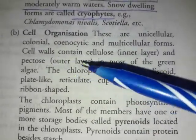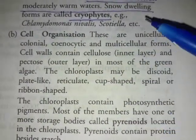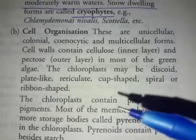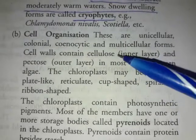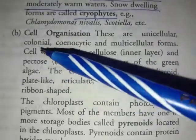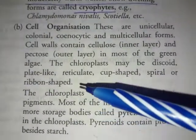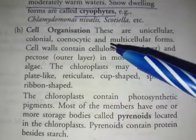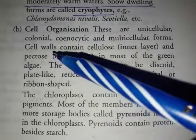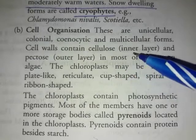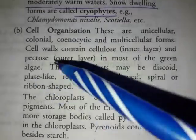You can have a unicellular form, colonial form, coenocytic form, and multicellular form. The cell wall contains cellulose and pectin. The cell wall is divided into two parts: the inner layer is cellulose and the outer layer is pectin.